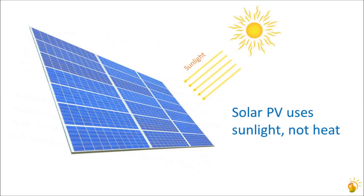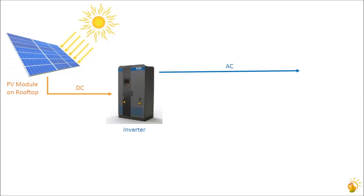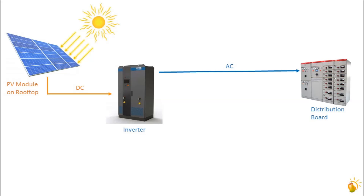Let us understand how rooftop solar PV works. Solar panels generate DC power when the Sun shines. This DC power is in turn fed into an inverter that converts it into AC power. This AC power is fed into your distribution board, from where it flows to your electrical loads. This is the basic layout of a solar plant.